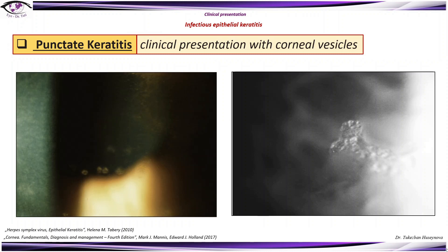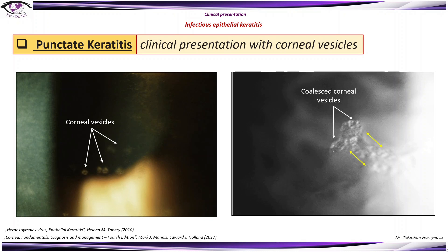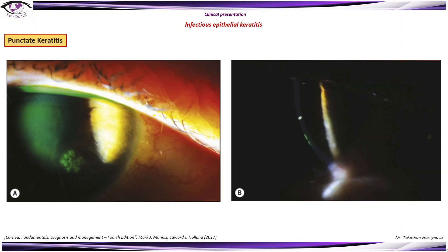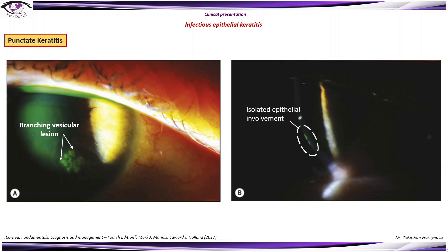Punctate keratitis is the clinical presentation with corneal vesicles. These lesions begin as punctate whitish opaque plaques of swollen epithelial cells and are stained negatively with fluorescein. In this image we can see that the corneal vesicles have coalesced and the raised appearance indicates that ulceration has not yet occurred. In another sample, we can see a branching vesicular lesion of HSV keratitis where confluent fluorescein staining centrally indicates true ulceration, and a slit beam of the same lesion shows isolated epithelial involvement.